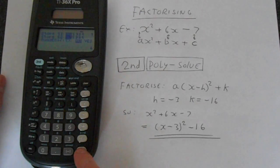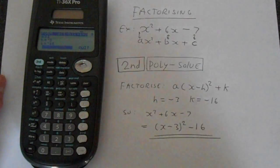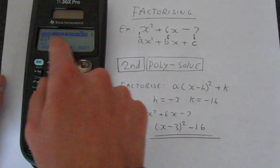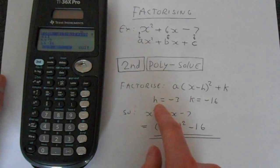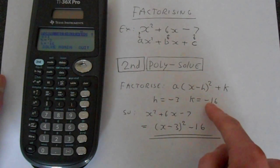And just keep pressing enter for a while, go through all these menus, and then you get to this one. And this has factorized that. So it's saying that h is minus 3 and k is minus 16.